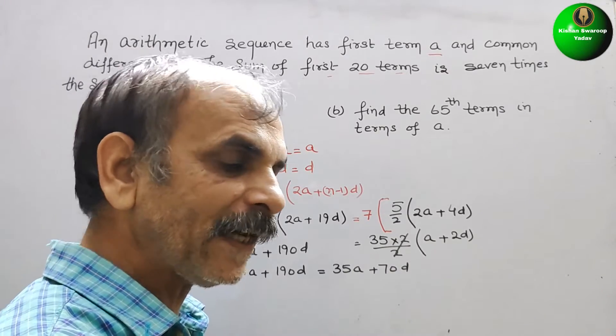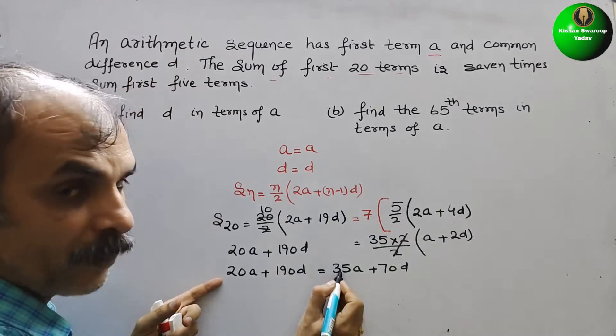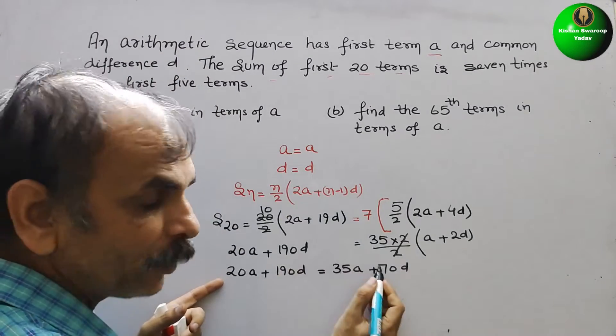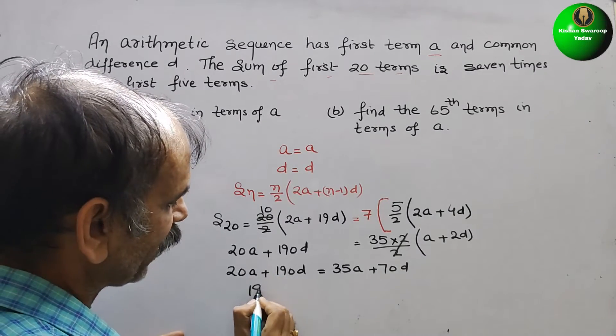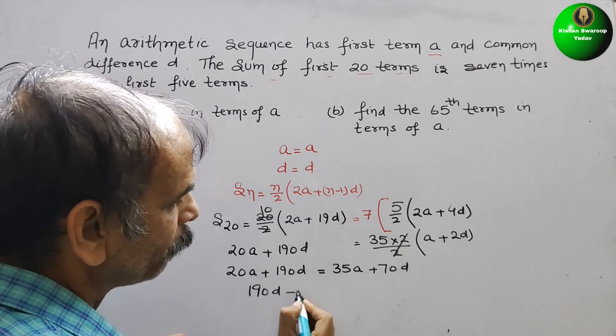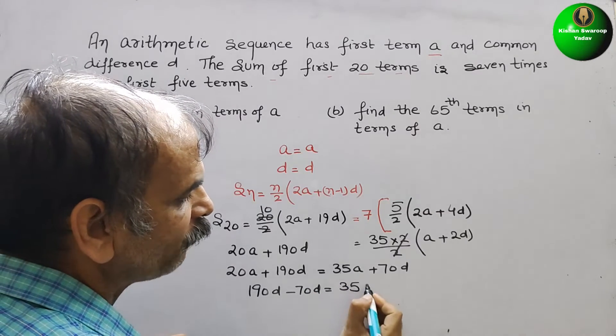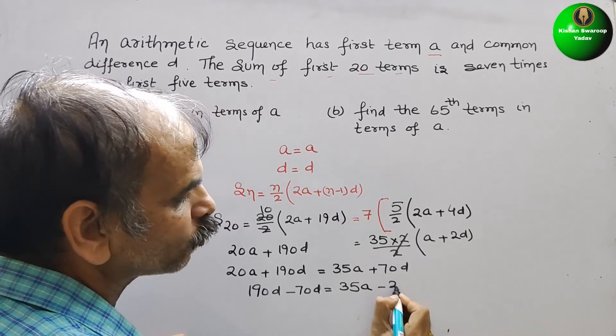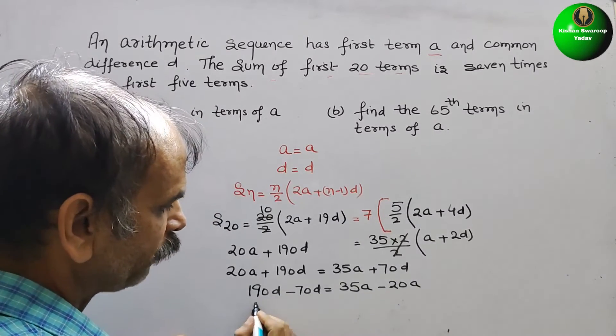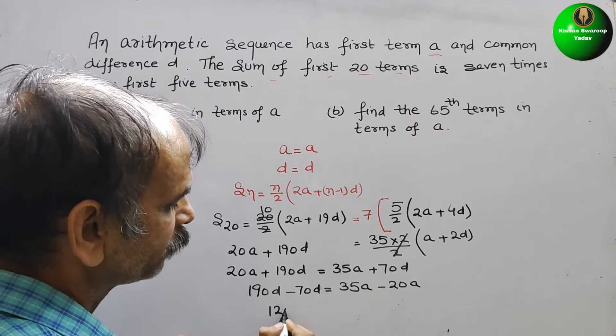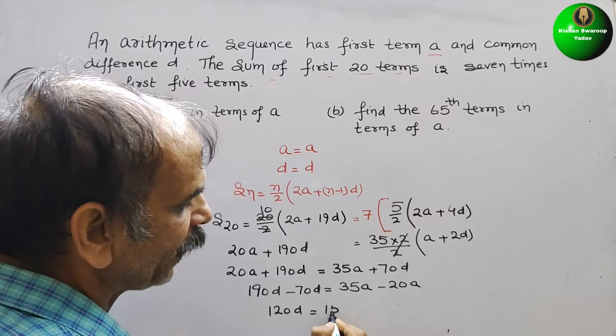Bring A to one side, D to one side. So here it is 190D minus 70D, that is equal to 35A minus 20A. So here it will be 120D equals 15A.